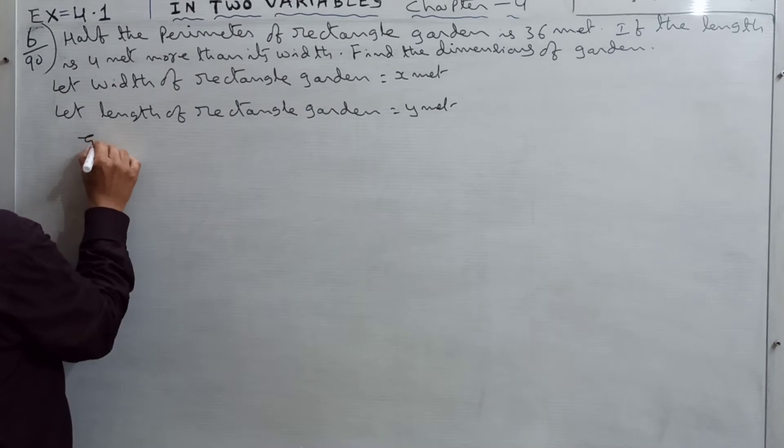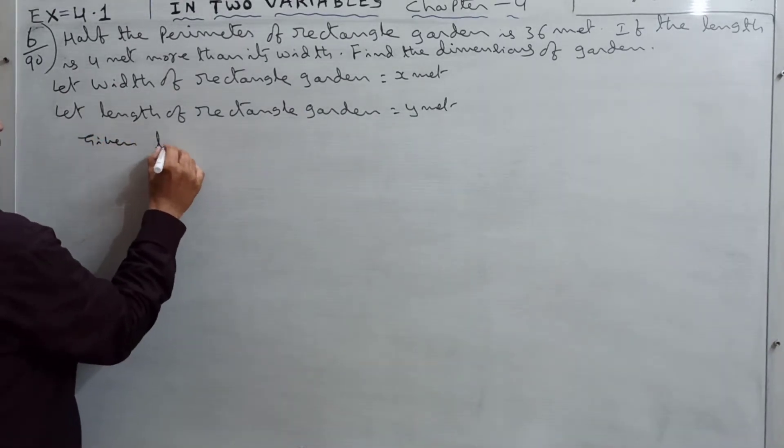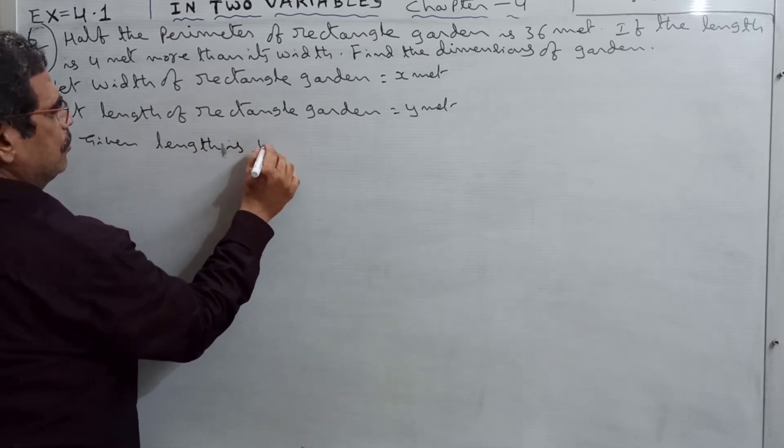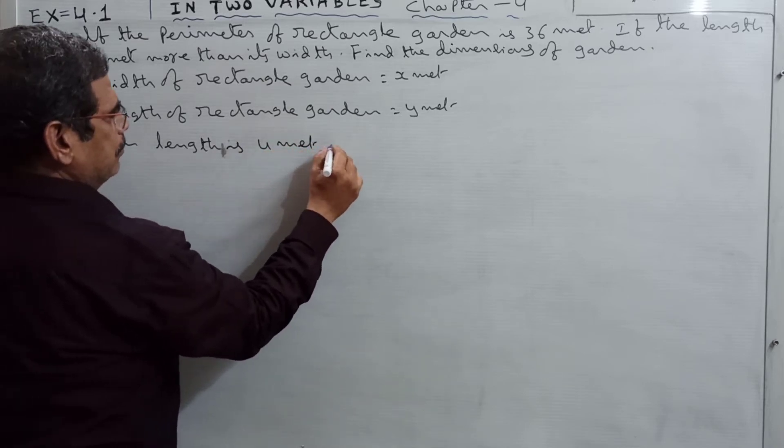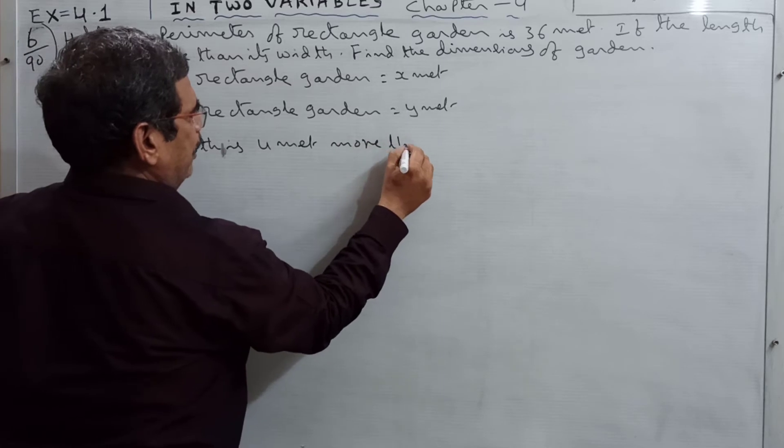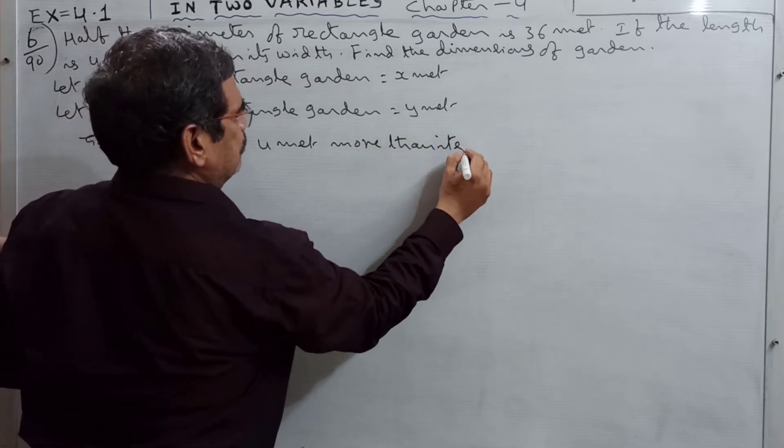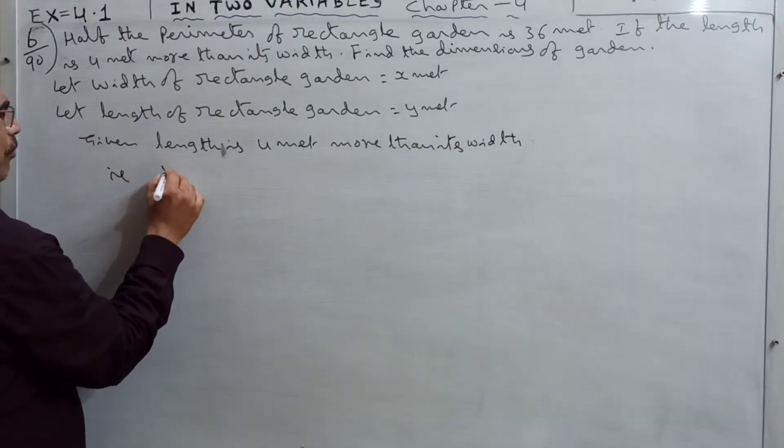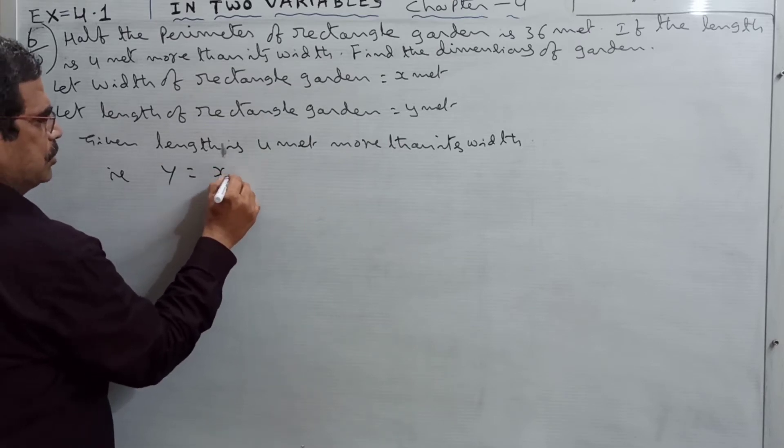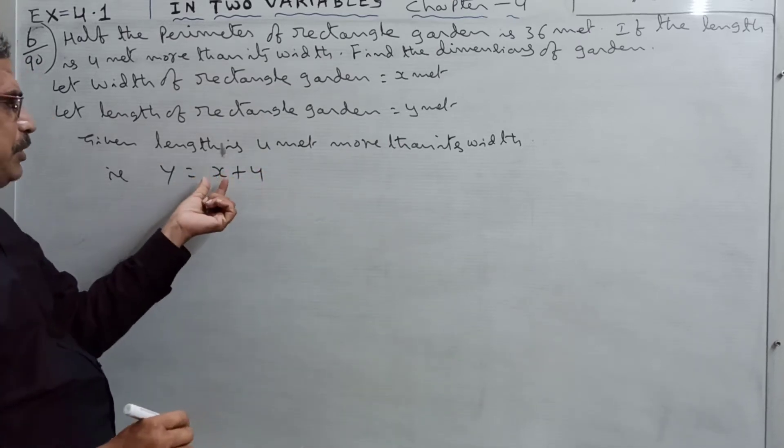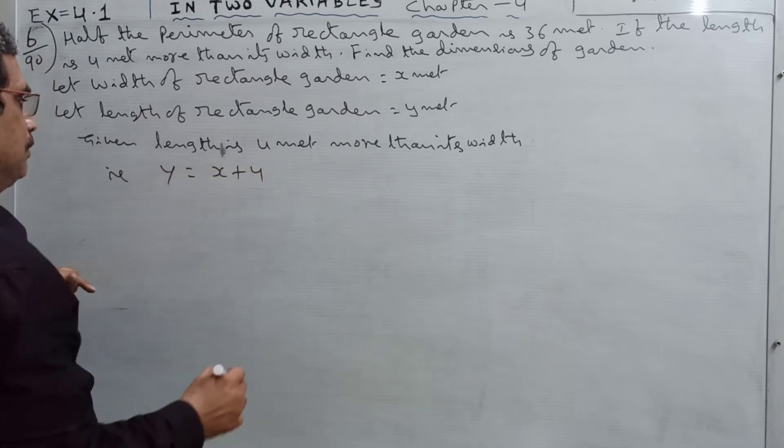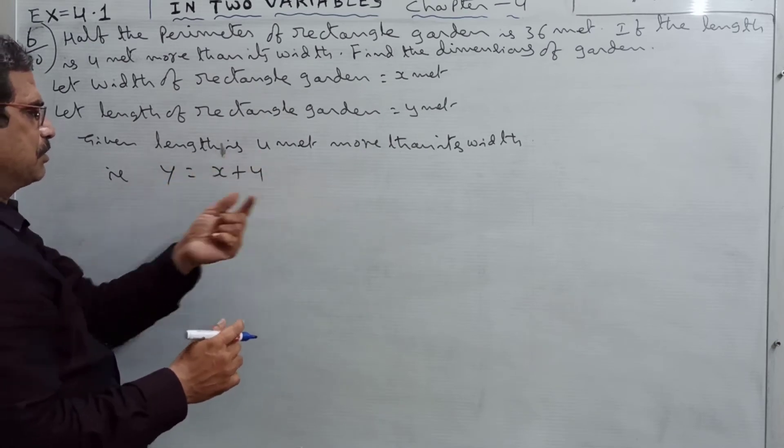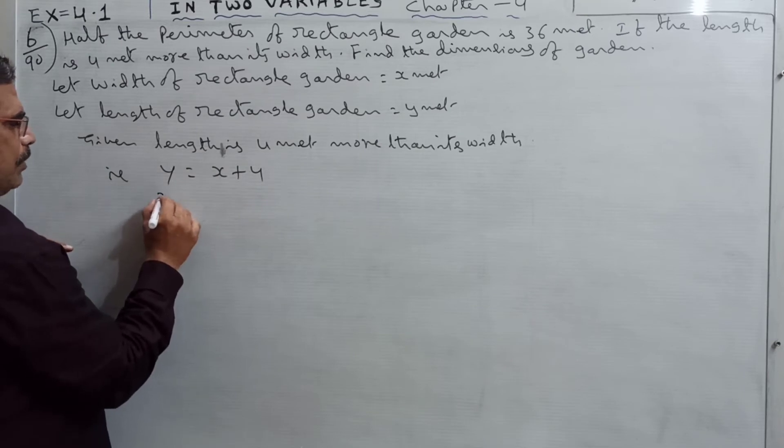Given: Length is 4 meters more than its width. That is, length means y, so y is equal to x plus 4. We can rearrange this as x minus y is equal to minus 4. This is the first equation.